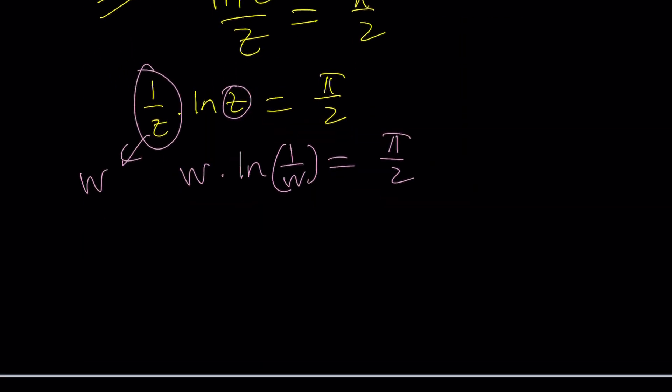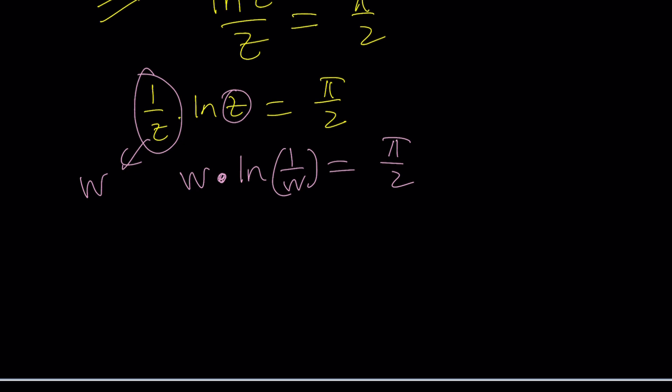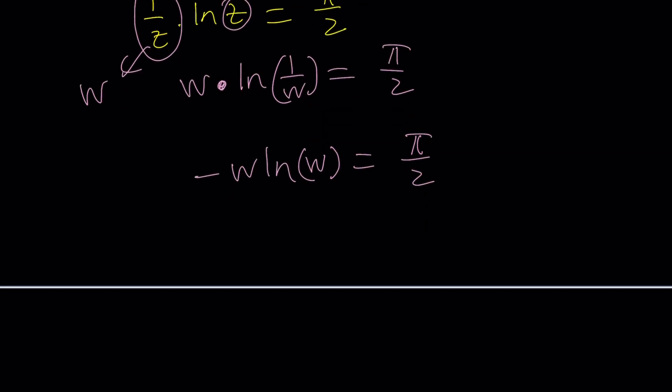And then I'm going to go ahead and write this as ln w to the power negative 1, which is going to bring a negative here like this, so I can write it like this, right? And I multiply both sides by negative 1, which is the critical part that gives us the thingy.